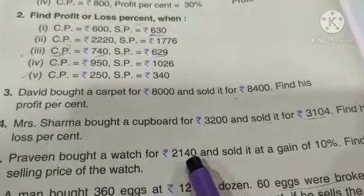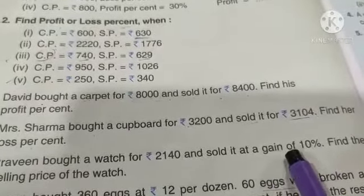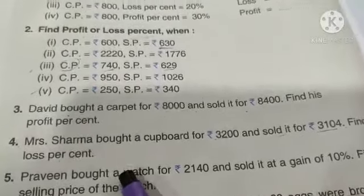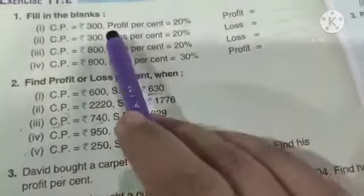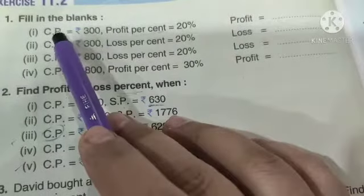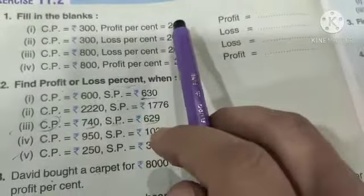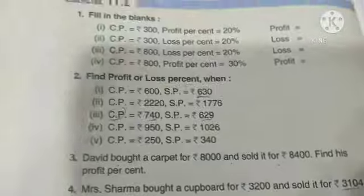Cost price is given. Gain, gain means profit. Profit of 10%, profit percentage is given. Cost price is given, selling price to find. So this is the question. Cost price is given, gain means profit percentage is given. So what does it mean? Selling price is given, so how do we do it?